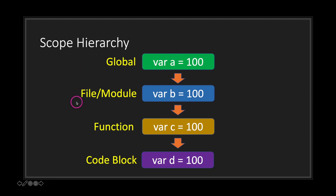Let's look at an example. The global scope declares variable A, and variable A can propagate down. It can be used in your classes, in the functions within your classes, and in your code blocks such as a for or while loop.